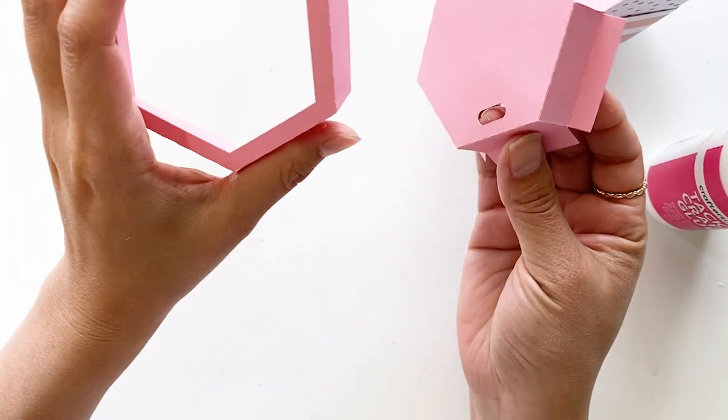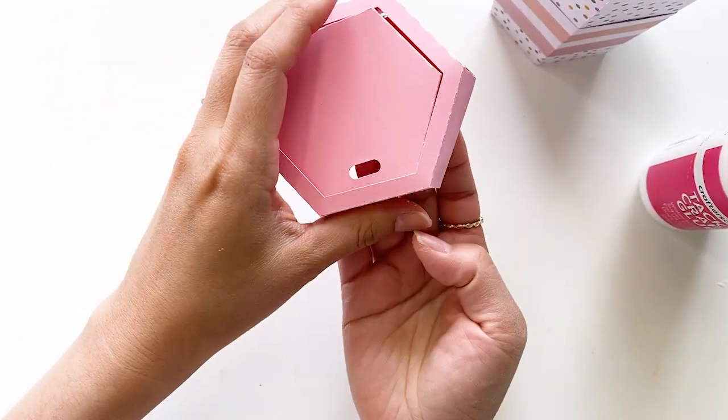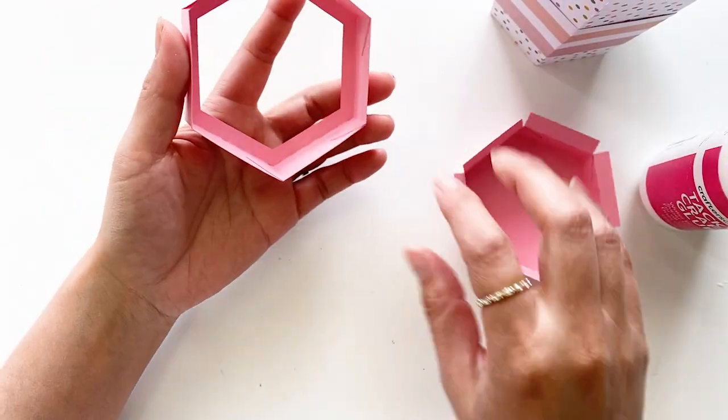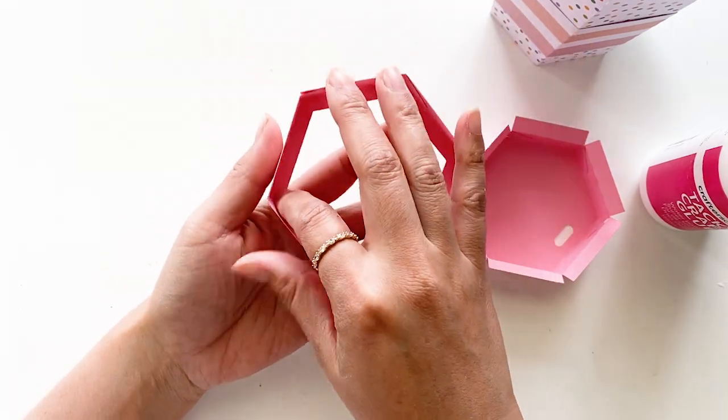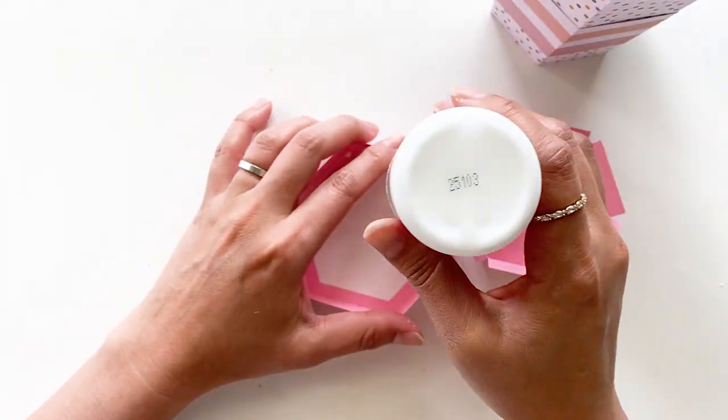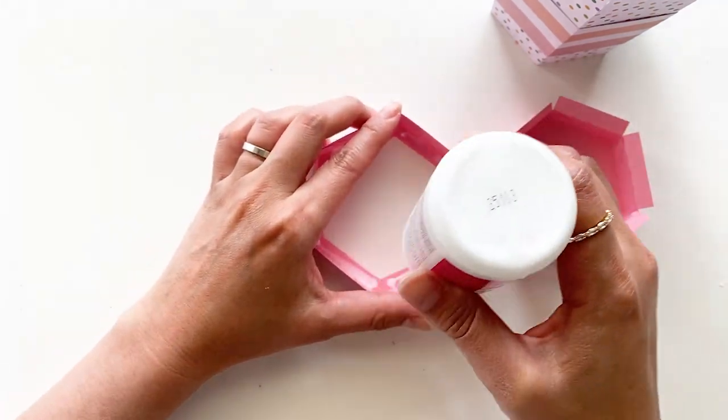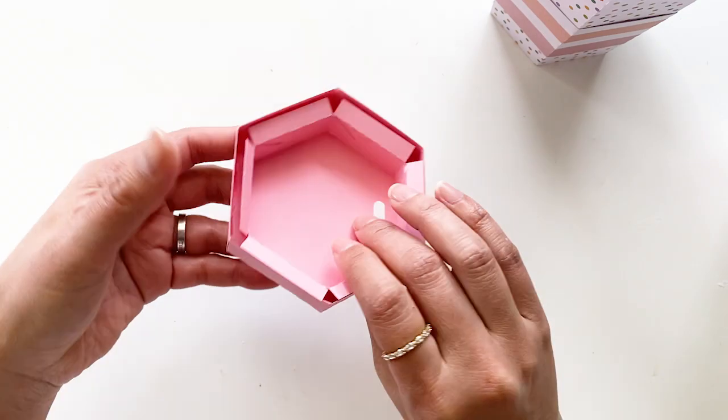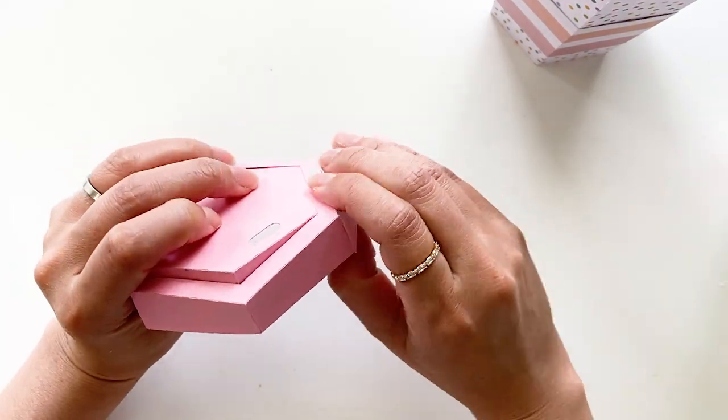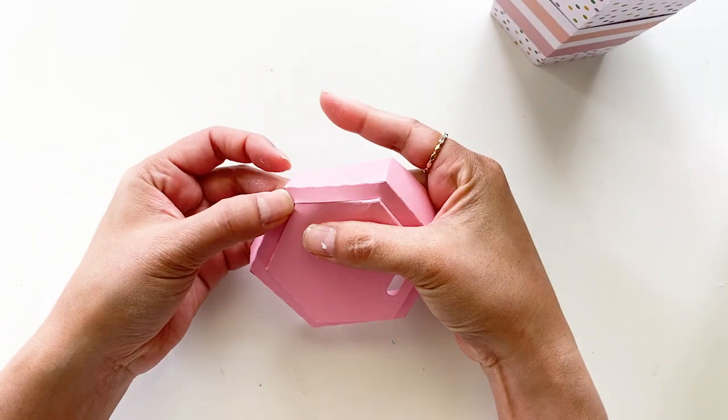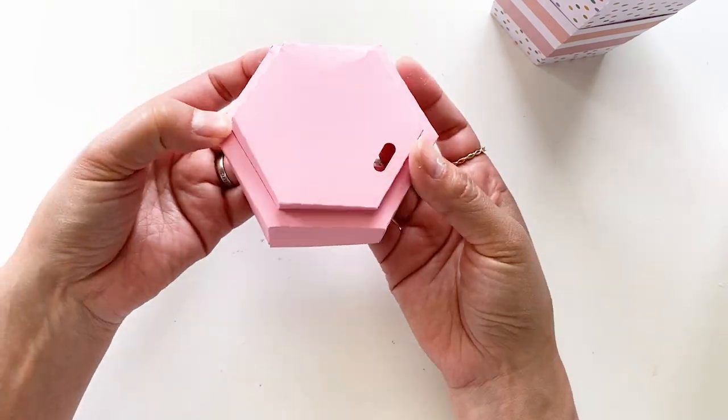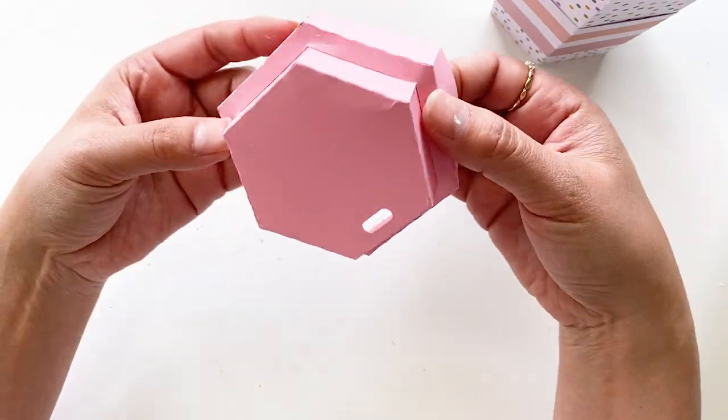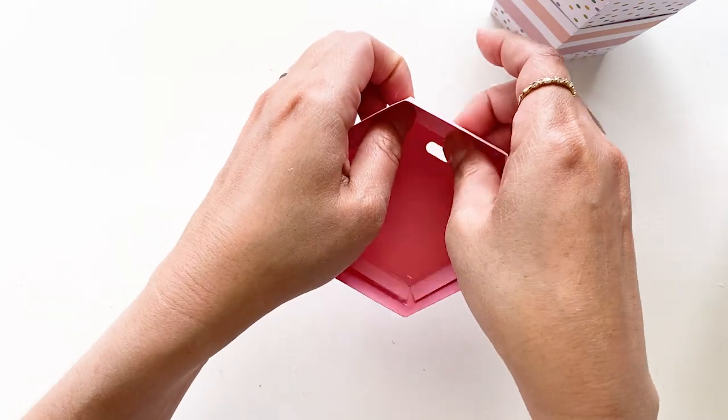Next, we are going to put the top part of the lid through the hexagon here. I am going to put glue at the back here. Pull the lid through carefully and gently. Once it is through, press where the glue is gently to attach the two parts together.